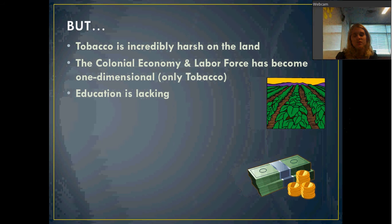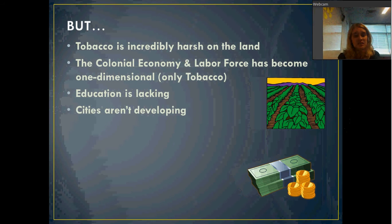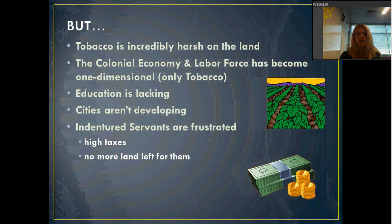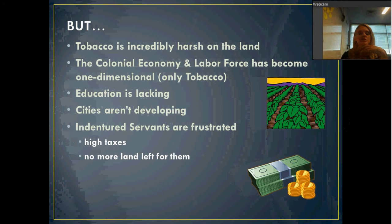There is not a lot of education, so people are not getting out of the tobacco industry, especially indentured servants. There are also not many cities developing in the southern United States. Indentured servants are getting pretty frustrated because after five to ten years — usually about seven years on average — indentured servants are free to go. They get a set of clothes, some money, and are basically told good luck. But taxes are high and there's not a whole lot of land left for them to buy.